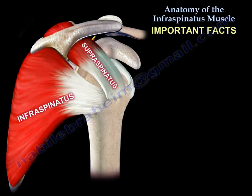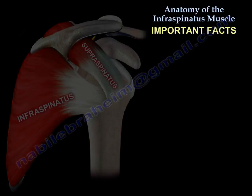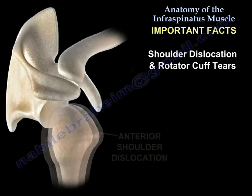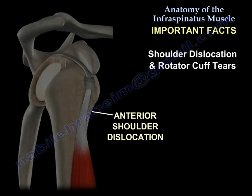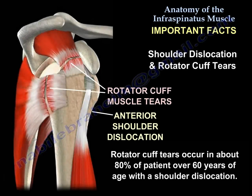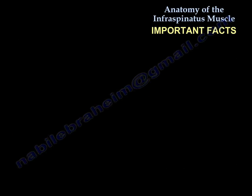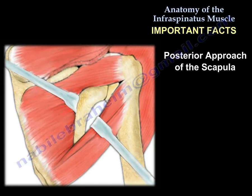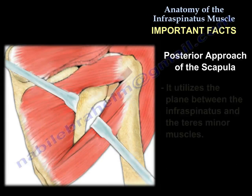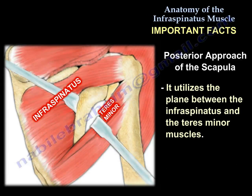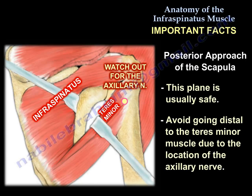Here are some important facts involving the infraspinatus muscle. Regarding shoulder dislocation and cuff tears: cuff tears occur in 80% of patients above the age of 60 with shoulder dislocation. The posterior approach of the scapula, or posterior portal for shoulder arthroscopy, utilizes the plane between the infraspinatus — supplied by the suprascapular nerve — and the teres minor, supplied by the axillary nerve. This plane is usually safe.